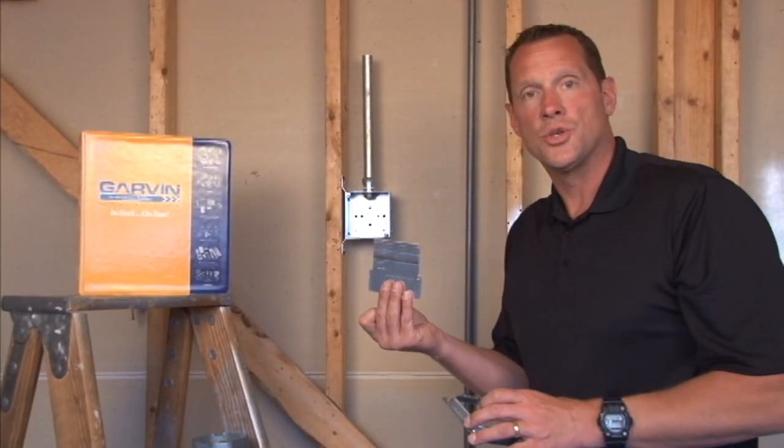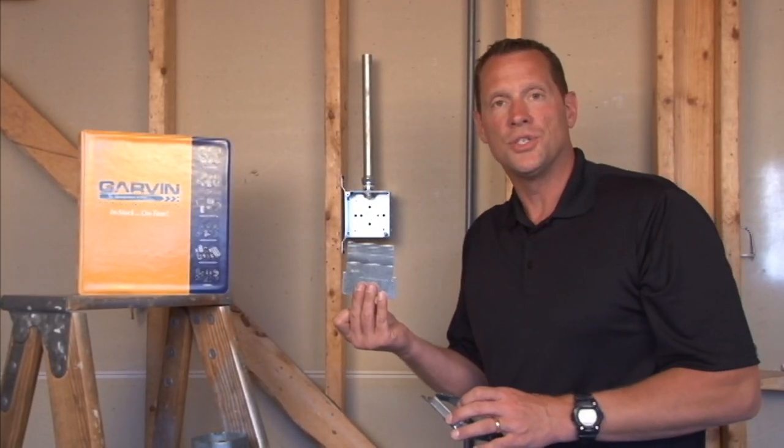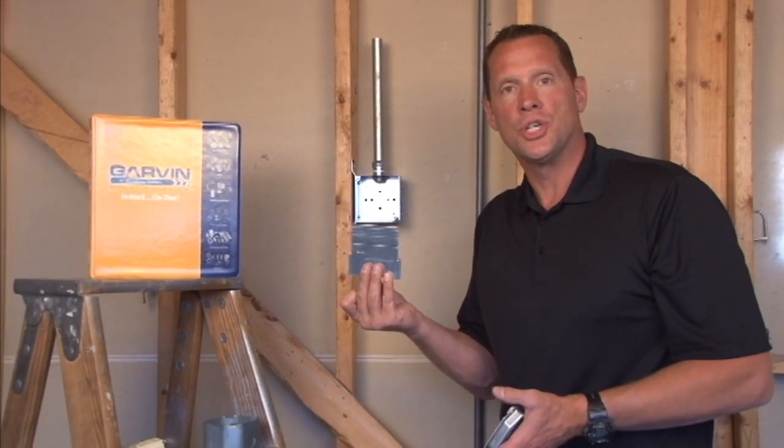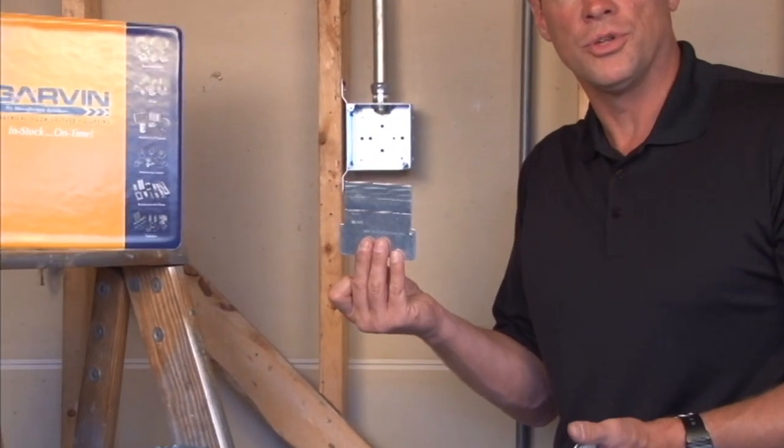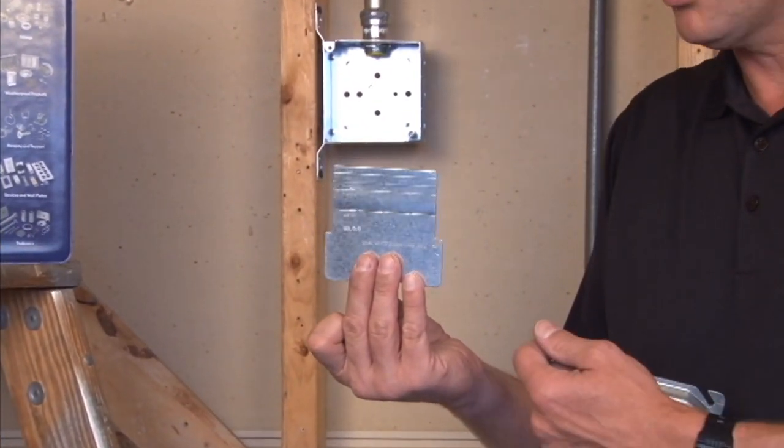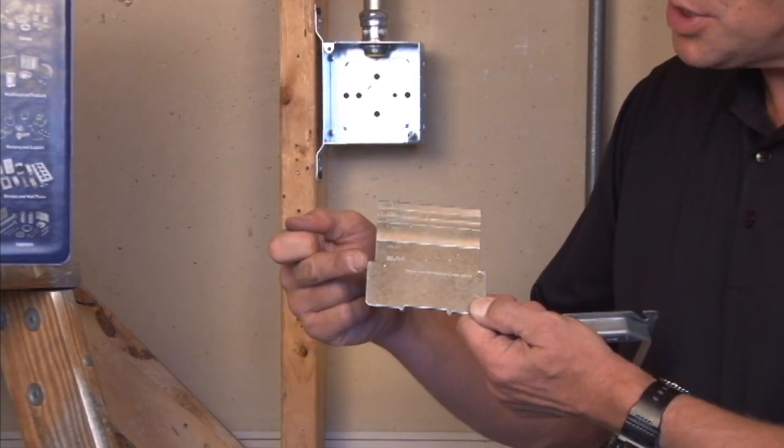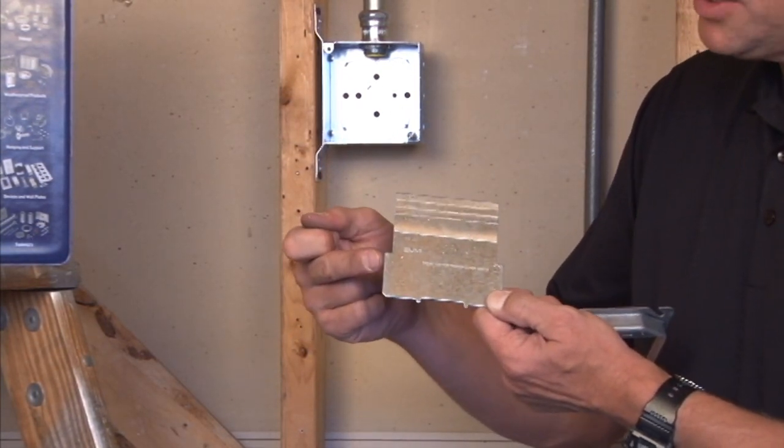Garvin Industries manufactures many low voltage device partition plates. These particular partition plates are designed to separate low voltage applications and devices from power or high voltage applications. They're made for both shallow inch and a half boxes or two and an eighth inch deep boxes.